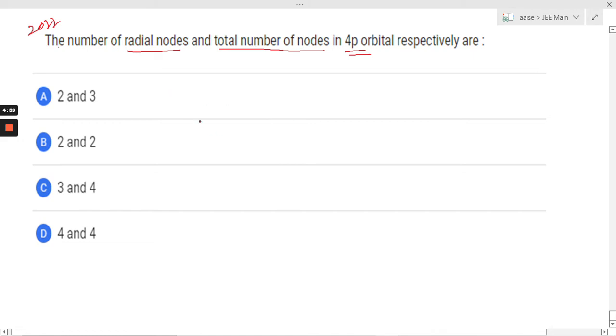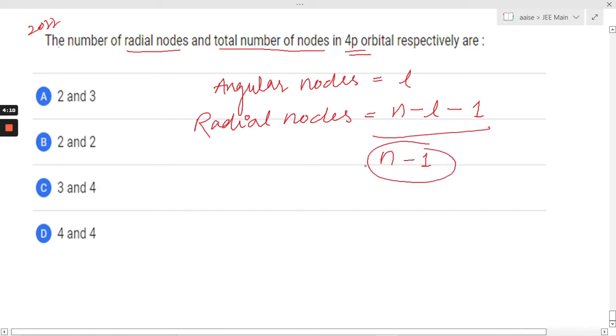Let's see how to solve this. First, we know that angular nodes equals L, and radial nodes equals n minus L minus 1. The total nodes equals n minus 1. We need to find the radial nodes and total nodes.